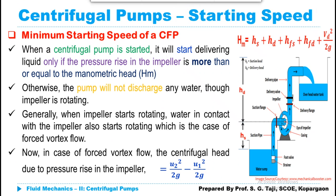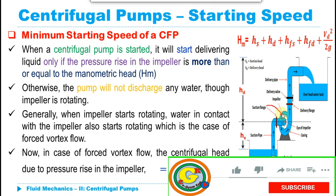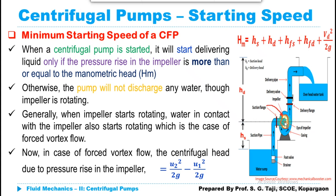As discussed previously, mechanical energy is supplied to the impeller through the shaft, causing it to rotate. Whatever liquid is in contact with the impeller will also start to rotate, and due to that rotation there will be a development of centrifugal head, causing water or fluid to be pushed away from the central axis of rotation. This is the principle of forced vortex flow. That liquid is taken to the outer part of the casing where kinetic energy is converted into pressure energy, and it is delivered with increasing pressure energy to the outlet of the casing and through the delivery pipe to the desired location.